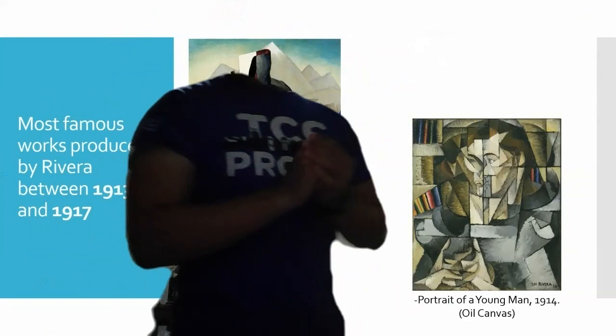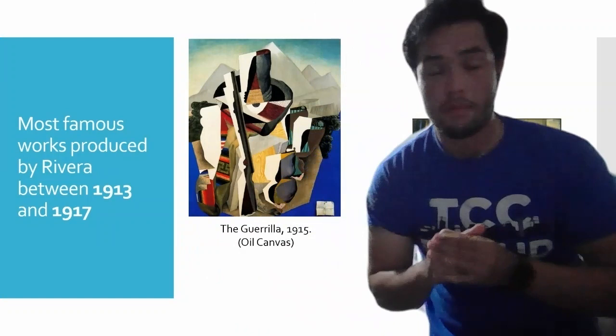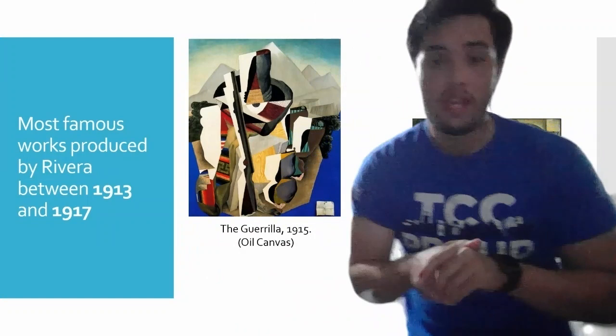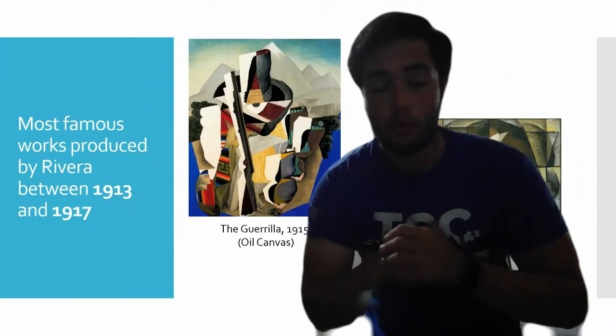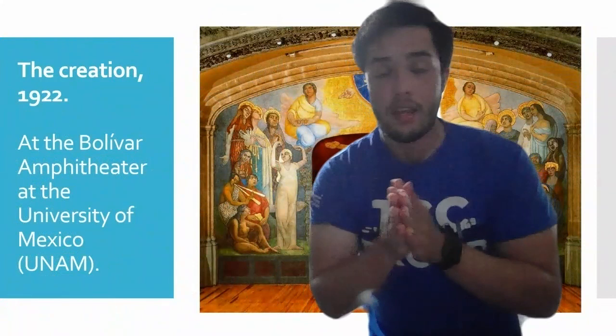From 1913 to 1917 he produced two very important pieces — the most notable at that time: the Guerrilla and the Portrait of a Young Man. These were very different from his later work, as they are more in the cubist style.